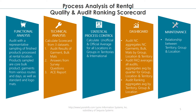Technical analysis: calculate the scorecard from three datasets — audit results of garments, bulk, and mats; answers from survey questions; and the ACE report. Statistical process control: calculate unofficial and official averages for all locations, groups, territories, and international.